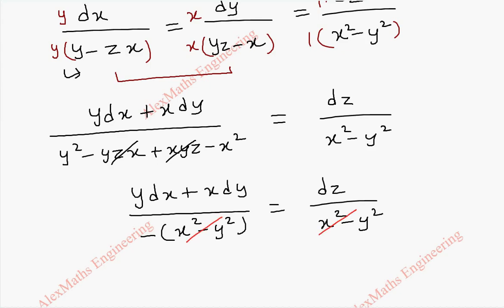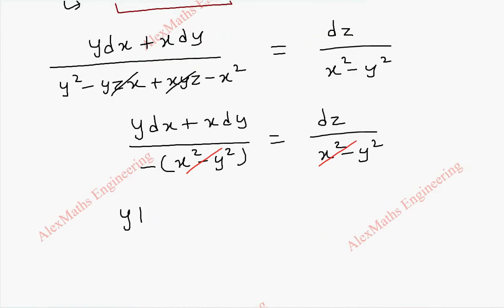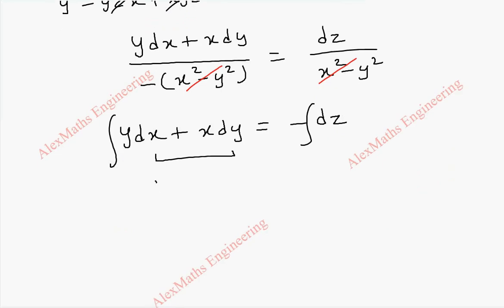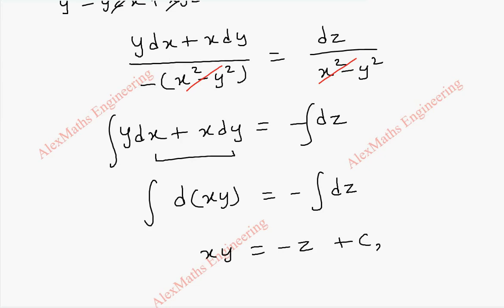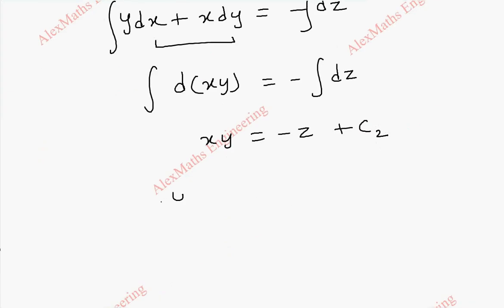By cross multiplication, taking the negative sign to the other side, we get y dx plus x dy equal to minus dz. Integrating both sides: the left side is the product rule of x and y — the differentiation of x times y is y dx plus x dy — so it integrates to xy. The right side integrates to minus z, plus a constant c2. So this gives xy plus z equal to c2. We shall name this as constant b.